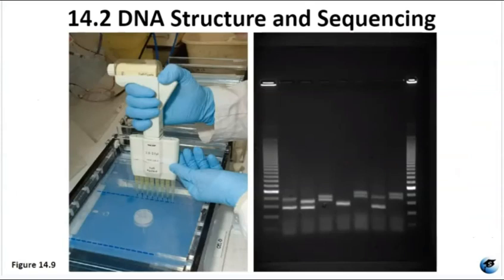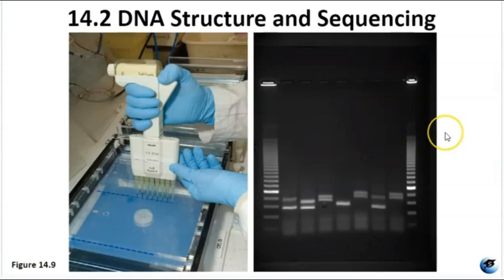In gel electrophoresis, you load DNA into wells, put a cover on, and turn on a power source that runs electricity through the gel. After it's done running and you stain the gel, you can put it under a light and see the DNA that has been separated by size.